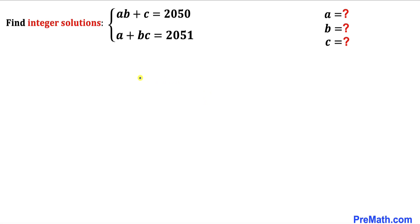Welcome to pre-math. In this video we are going to find the integer solutions for this given system of equations: ab + c = 2050, and the second equation is a + bc = 2051. In other words, we are going to find the values of a, b, and c where a, b, and c are integers.